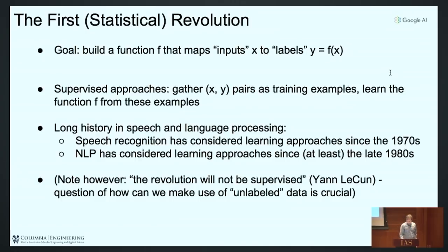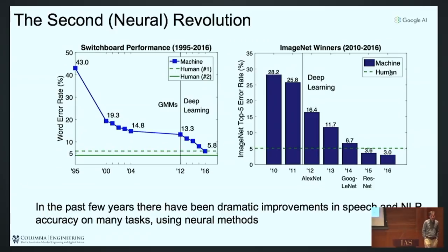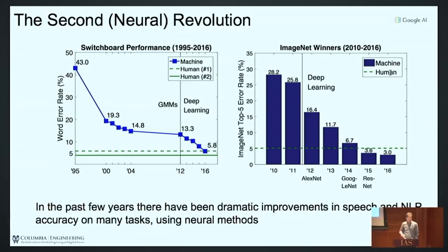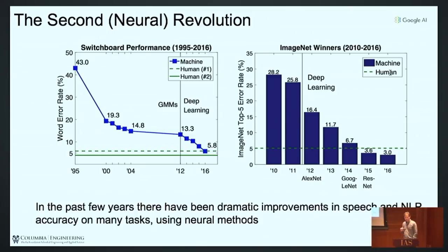The second revolution was the neural one, which has been transformative. Looking at speech recognition on the Switchboard dataset — telephone conversations between people introduced in the mid-90s — the initial result was about 43% word error rate, quickly coming down to around 15-19%. There was a long plateau from around 2004 to 2012, and then suddenly a dramatic fall-off with the advent of neural methods. The transformation in speech recognition has been absolutely dramatic — speech recognizers work much, much better now.